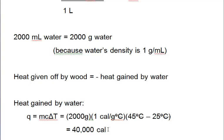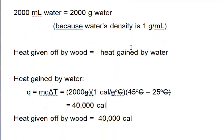If we wanted to know then how much heat that the wood had given off, well, if the water gained 40,000, the wood must have lost 40,000. Because the heat gained by the water is opposite of the heat given off by the burning stuff. So the wood in this case gave off 40,000 calories.